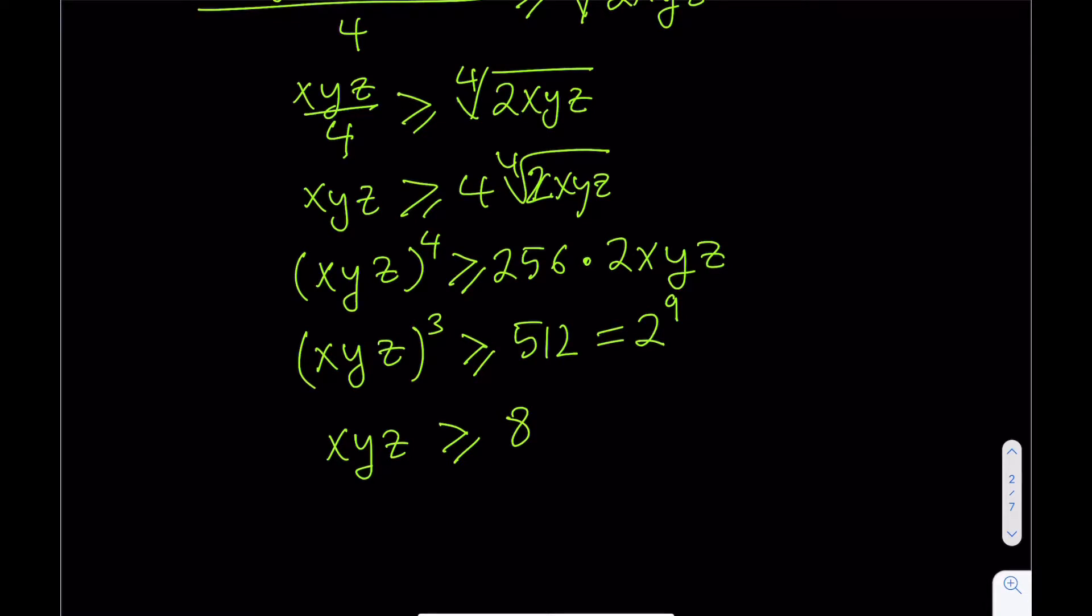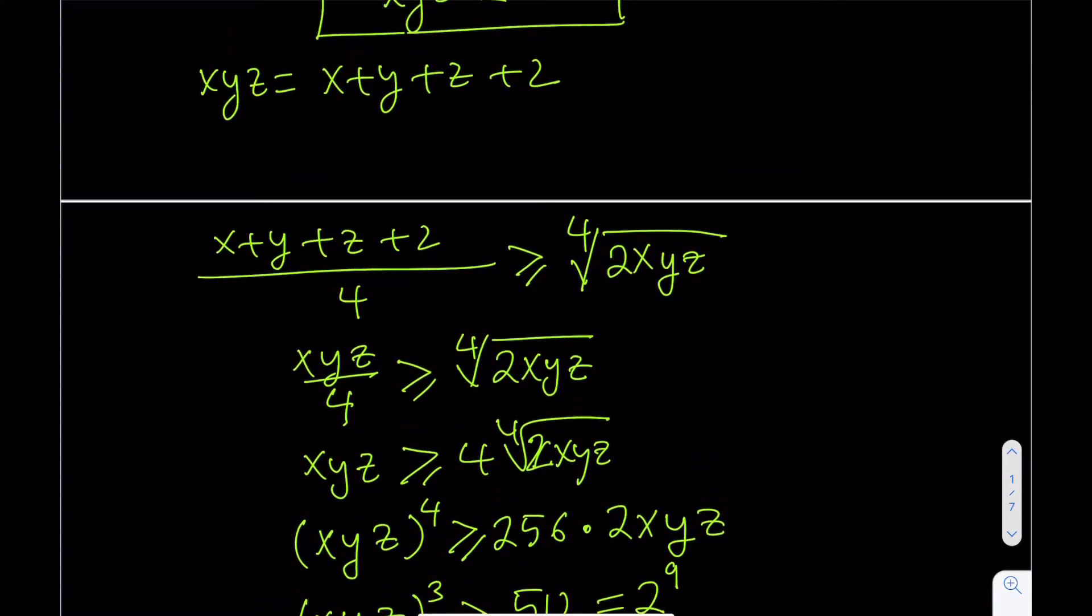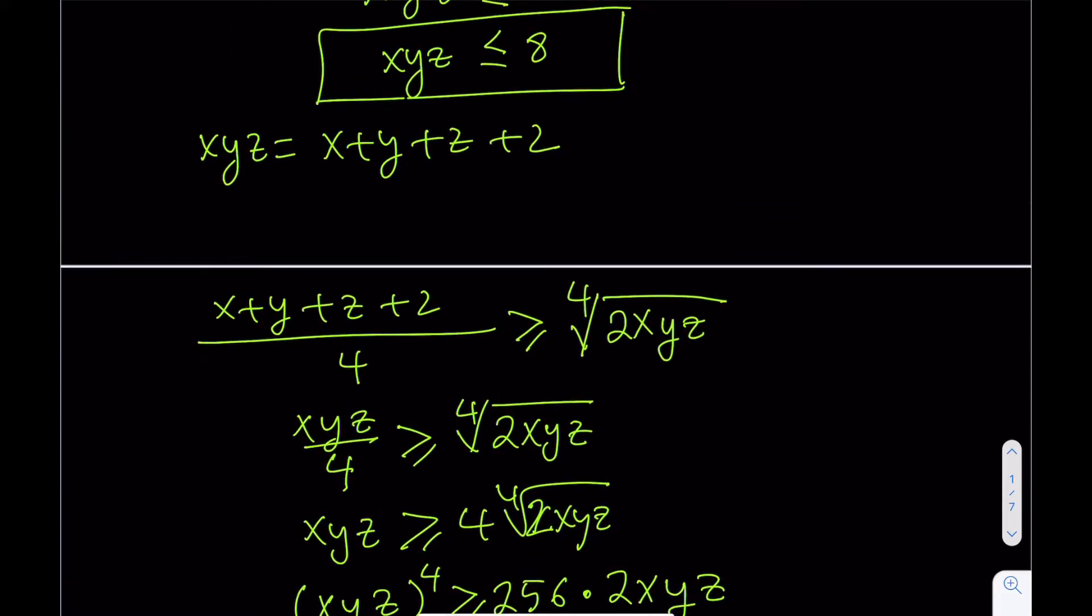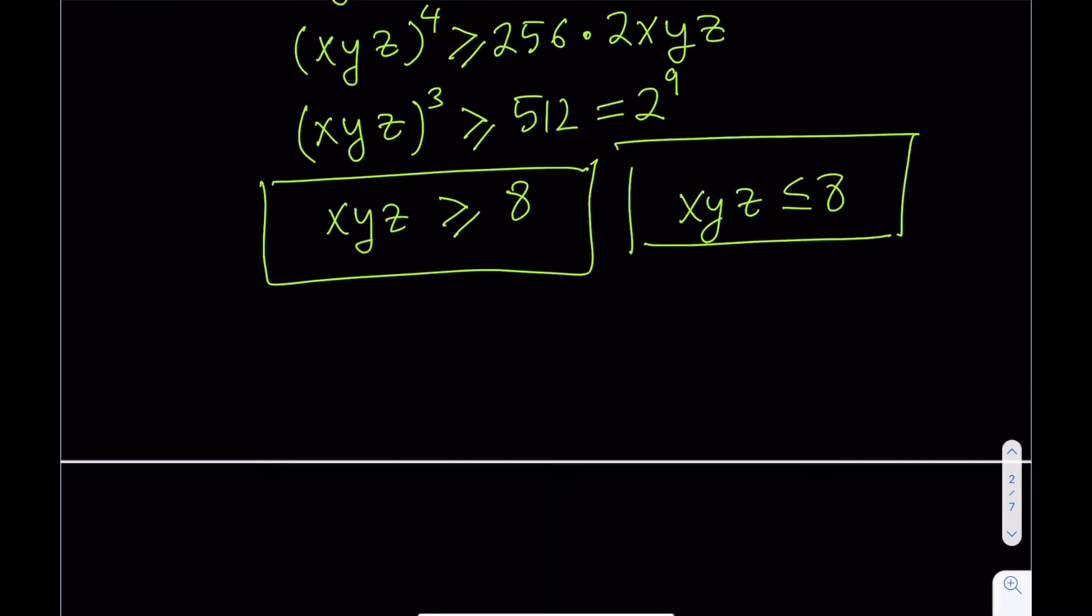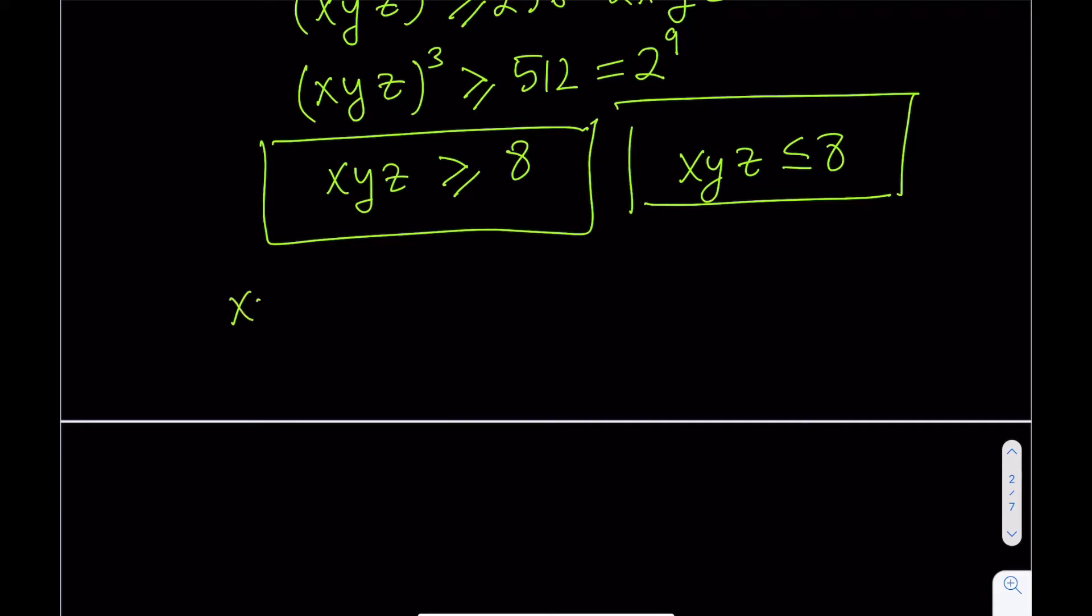So, we got a very interesting result here by using arithmetic mean, geometric mean, or AM-GM inequality. Because our first result was XYZ is less than or equal to 8. Now, we're saying that XYZ is greater than or equal to 8. So, if you go ahead and put those together, the only way to get out of this is by accepting the fact that XYZ is equal to 8.